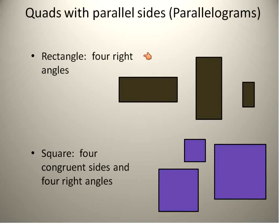Another kind of parallelogram is a square. A square not only has four right angles like a rectangle, but all sides are congruent. A parallelogram is any four-sided figure with two pairs of parallel lines. A rectangle is a kind of parallelogram with all angles being 90 degrees. And a square is a kind of rectangle where all the sides are the same.